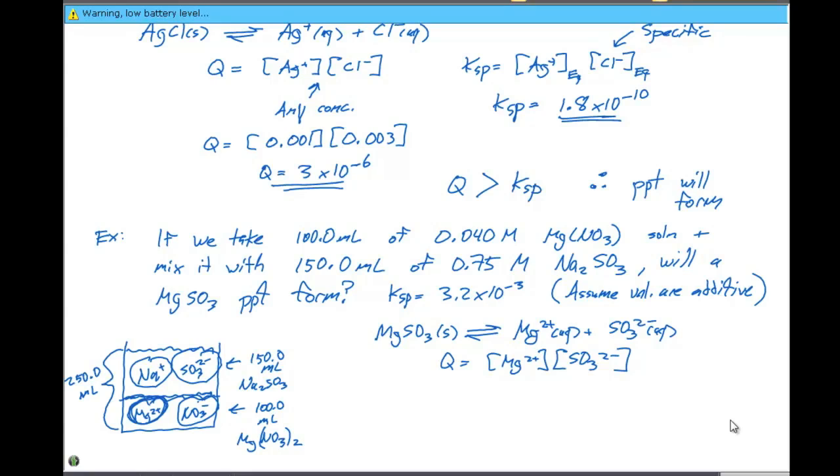So now what we have to do is calculate the concentrations of each of these species in solution. Our concentration of Mg2+ is going to equal the moles of Mg2+, which we can calculate by taking 0.040 moles of Mg2+ per liter times 100 milliliters, which would be 0.1000 liters, divided by the total volume, which in this case is 250 milliliters or 0.2500 liters. The liter units cancel in the numerator, so we have moles of Mg2+ divided by liters of solution. And this is going to give us a concentration of Mg2+ of 0.016 molar.